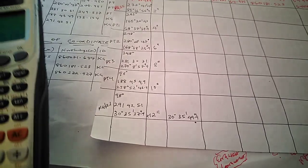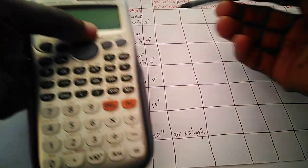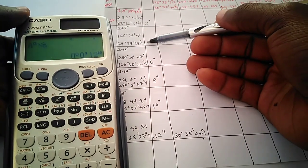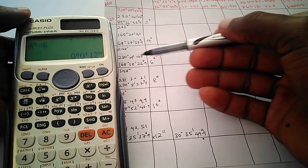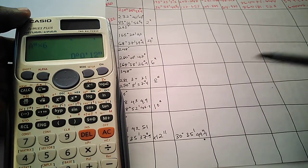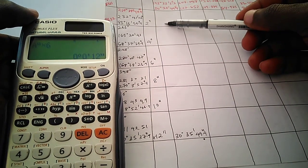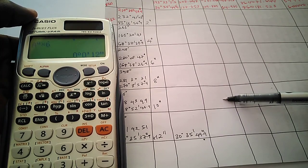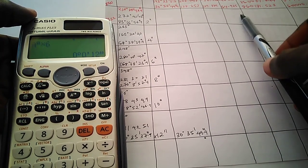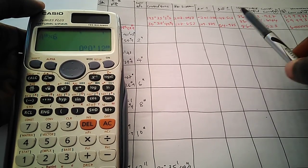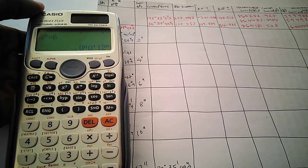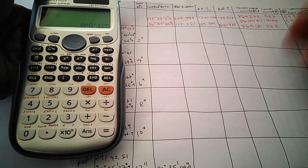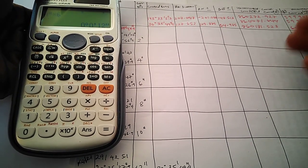To get the corrected bearing, we take the correction for each station and add it to the fault bearing of that station. On our next video we will calculate the corrected bearings, write our horizontal distances corrected for slope, then compute the partial coordinates — delta northing and delta easting — and progress to the final part.